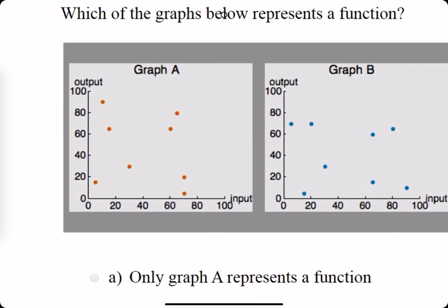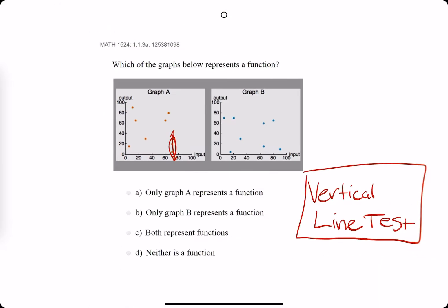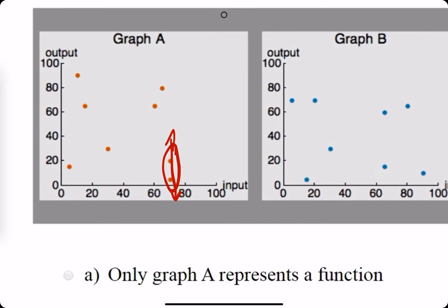In graph A, we kind of scan across, and we realize that these two points could probably exist on the same vertical line. So we say that graph A is not a function because there's one input, maybe about 70, that's outputting two outputs — two different y values.